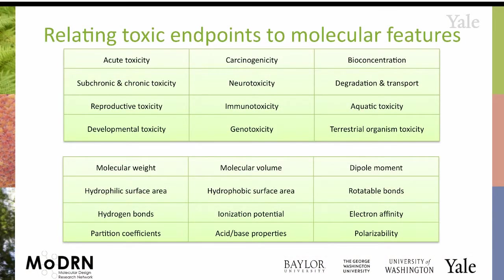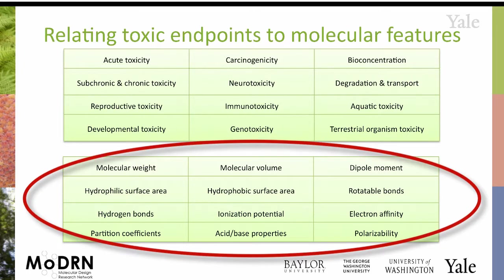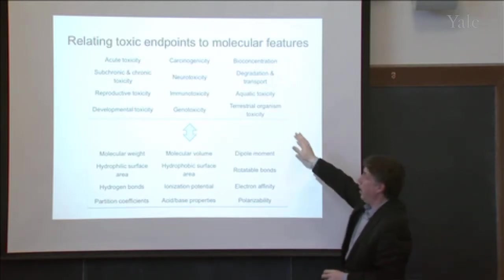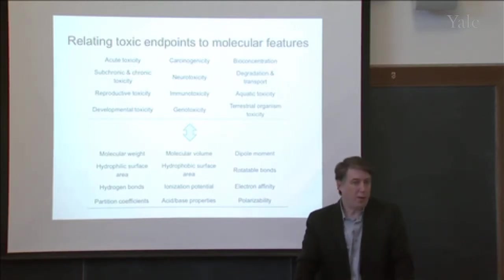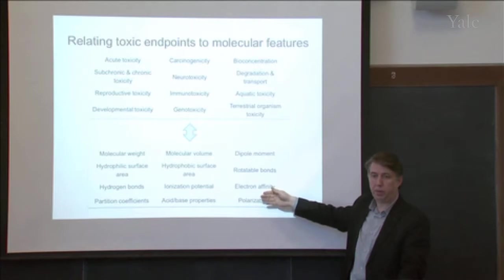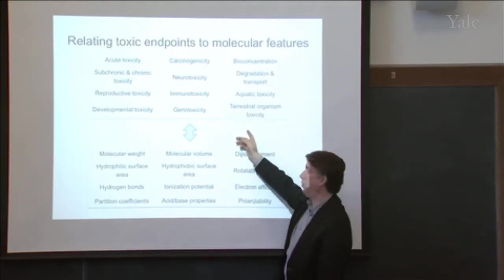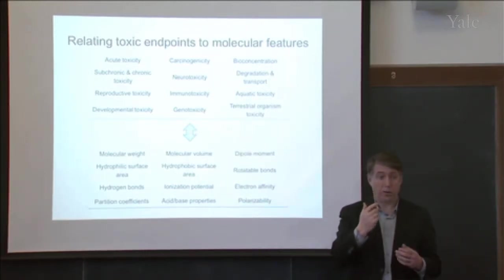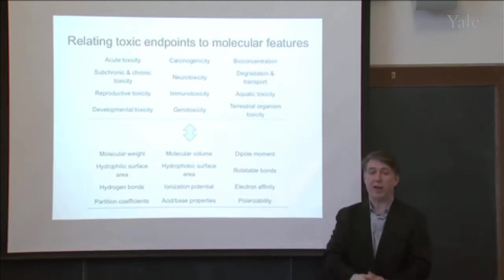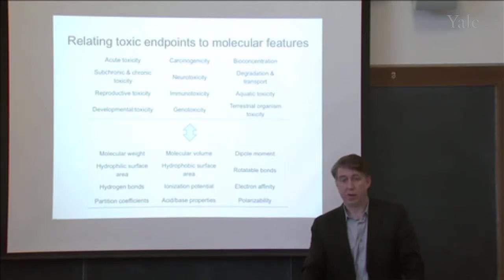This is perhaps the most important slide of today's lecture. This is the relationship between these toxic effects that we're going to be talking about and the physical chemical properties of the chemicals that we've been discussing for the past weeks. All of these different types of toxicity, a wide range of toxicity, different toxic pathways that we'll discuss, are directly derived from these physical chemical properties. You cannot have these different toxic effects without the right combination — or, depending on your perspective, the wrong combination — of physical chemical properties in order to make it happen.